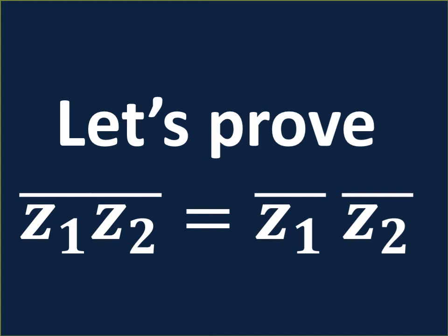In this video, we will learn to prove that the conjugate of z1 times z2 is equal to the conjugate of z1 times the conjugate of z2, where z1 and z2 are two complex numbers.